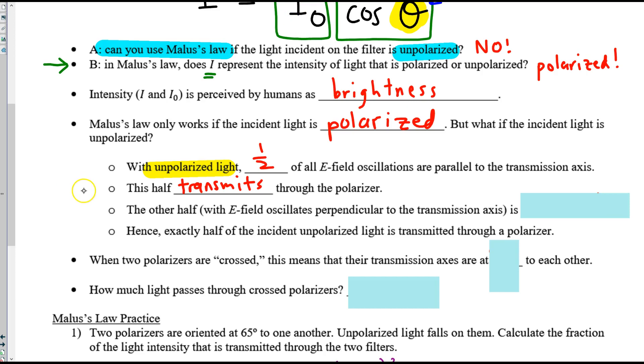For example, if our filter is like this, and the incident light is unpolarized, we could take that unpolarized light and represent it as vertically polarized and horizontally mixed together in equal quantities. When the light strikes the filter and passes through, half of it transmits the part parallel to the axis, and the other half gets blocked.